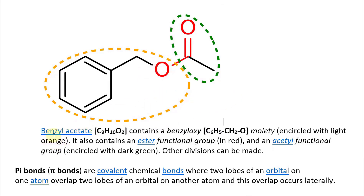Here's an example: benzyl acetate C9H10O2 contains a benzyloxy moiety, which is C6H5-CH2O, encircled in light orange. It also contains an ester functional group in red, and an acetyl functional group encircled with dark green.